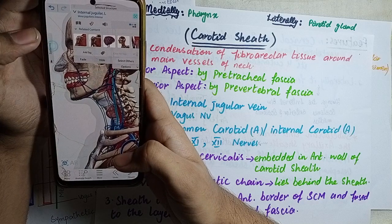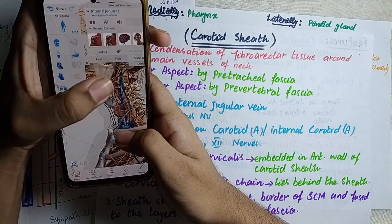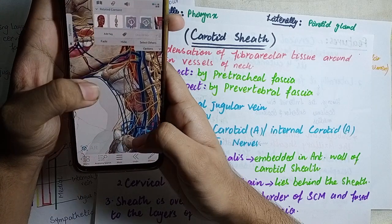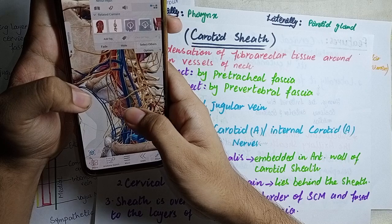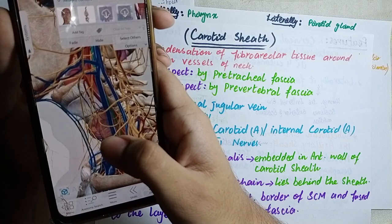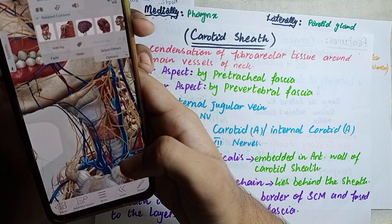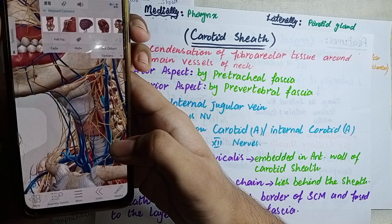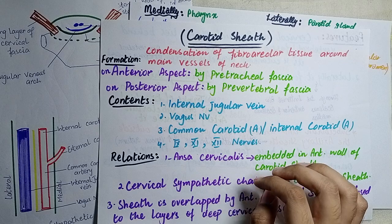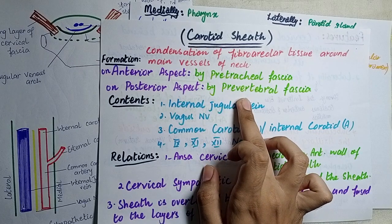We also have the vagus nerve, which is enclosed within the carotid sheath. So the three main structures — the common carotid artery, the internal jugular vein, and the vagus nerve — are all enclosed within the carotid sheath. When we talk about the formation, anteriorly it is formed by the pre-tracheal fascia, and posteriorly by the pre-vertebral fascia.